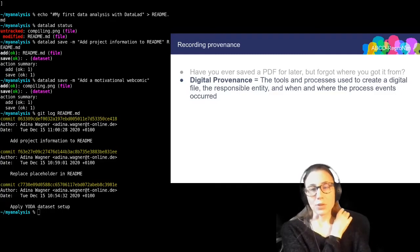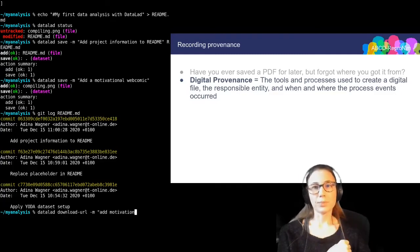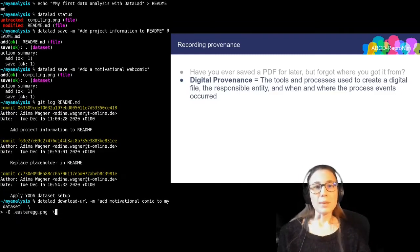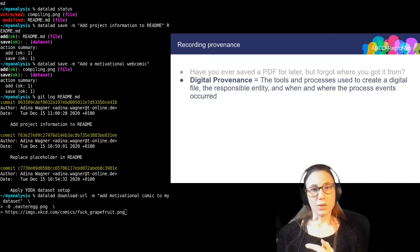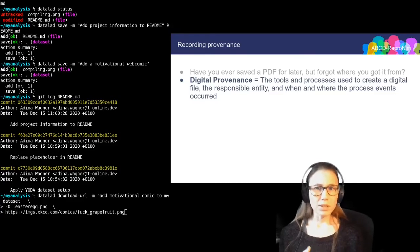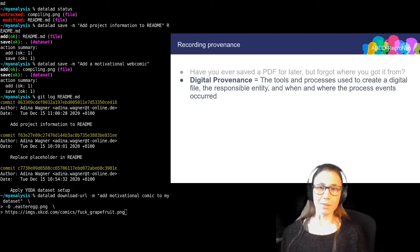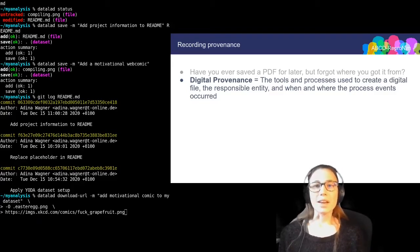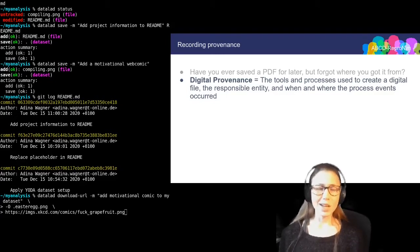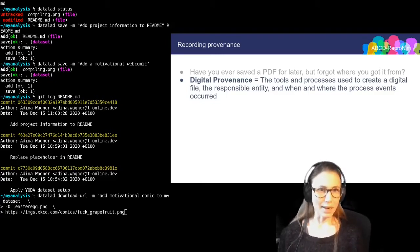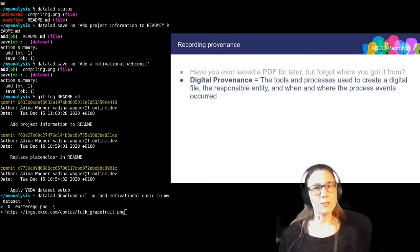I'm going to show you how I use this command right now. What I'm giving to this command is a URL — in this case to another webcomic — a commit message, and a file name. I'm hiding this little file here by giving it a file name that starts with a dot. Because on Unix-like systems, dot files are hidden. So I've placed a little Easter egg inside of my dataset so that people looking at my data analysis will find something funny.